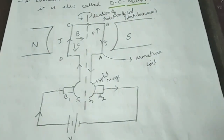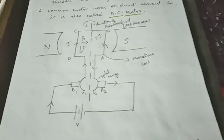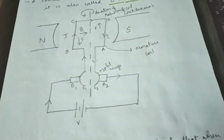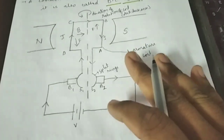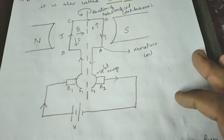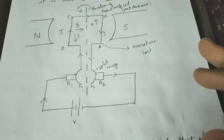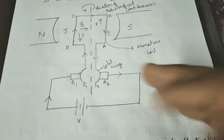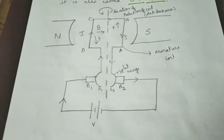Once I explain how to get this direction, you will understand it. The construction is simple: a horseshoe magnet, a rectangular coil, two split rings, carbon brushes, and a voltage source. This DC motor diagram is very similar to the DC generator diagram, but the only difference is that the motor converts electrical energy to mechanical energy, whereas the DC generator converts mechanical energy to electrical energy.